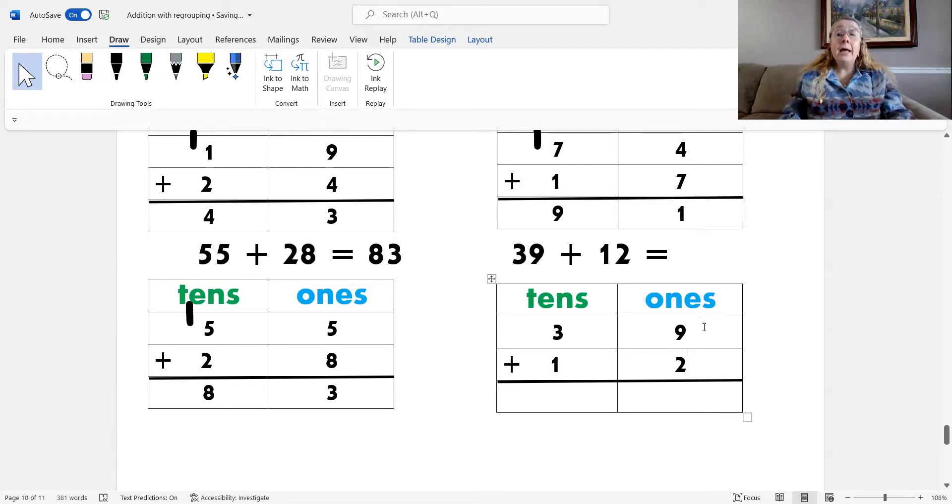Now, I need to add. 9 plus 2 is 11. You got it. 11 is the same as 1 ten and 1 one. So, I place my 1 into the ones column and my 10 into the tens column. And now, I add the tens. You got it. 1 plus 3 is 4 plus 1 more is 5.